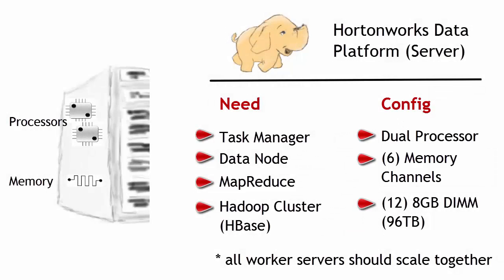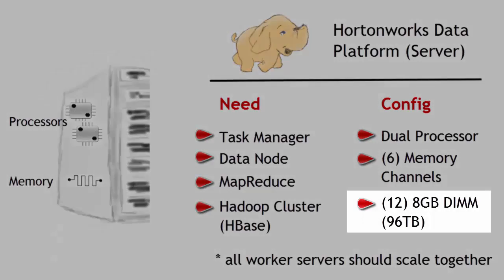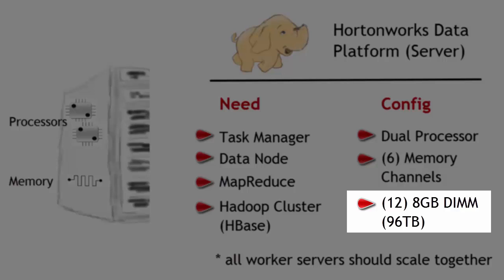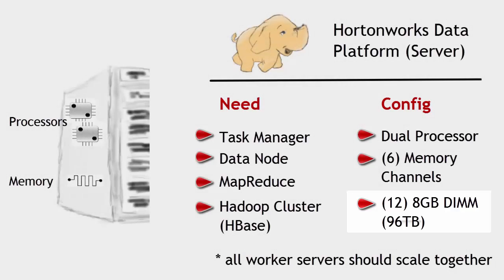We want to make sure we can support eight-gigabyte DIMMs in each slot. Usually a memory channel will have two slots for DIMMs, so we put two DIMMs in each at eight gigs each. Multiply that out — that's 12 times 8, which equals 96 gigabytes, not terabytes. Boy, wouldn't that be awesome — but that's a typo.